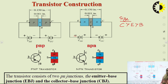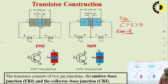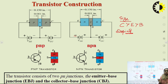Regarding doping level comparison: majority charge carriers have to flow quickly and fast, so the emitter has to be most heavily doped, followed by the collector, followed by the base. The central region — the base — has to be the most lightly doped so that it offers minimum resistance to the flow of charge carriers. The base has to be thinnest and most lightly doped.